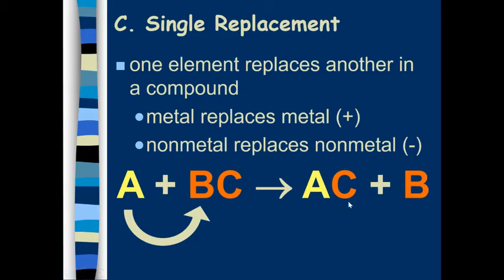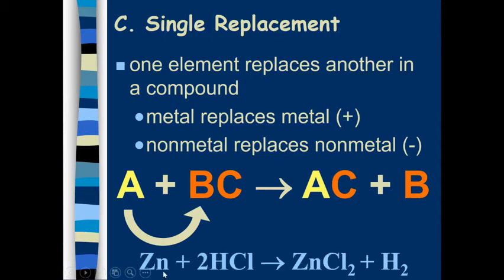Now these A's, B's, and C's are all just placeholders for actual elements. Those are the examples down below. So in this example, the zinc is replacing hydrogen in this compound, and so on the right side, the zinc is then paired with the chlorine, and the hydrogen is left alone.